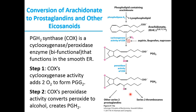Prostaglandins with different functional groups on the ring are given different letter designations. For example, a functional group OOH on the ring is given PGG and OH is given PGH. The subscript number indicates the number of double bonds. For example, a subscript of 2 indicates 2 double bonds in PGG2 and PGH2. Prostaglandins with 2 double bonds, all of which are derived from arachidinate, are referred to as series 2 prostaglandins.